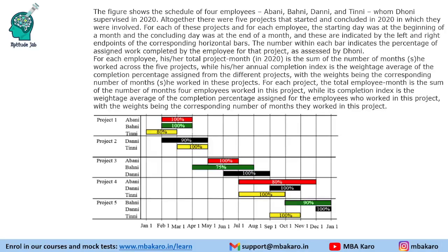Hello everyone, welcome to Aptitude Jab. This set from CAT 2021 Slot 3 gives us a chart. If someone does not know what this chart is called, this is called a Gantt chart. Many of you would call it a bar graph, but it is a kind of chart in which you have timelines. So it is called a Gantt chart — a special kind of bar graph.